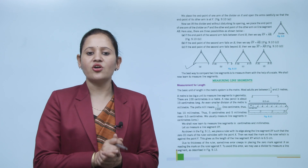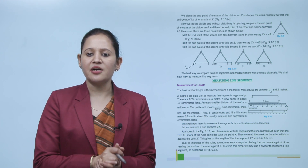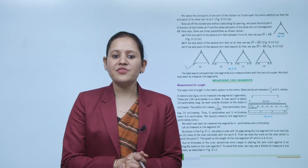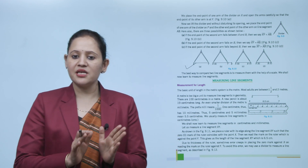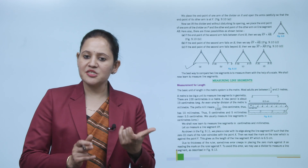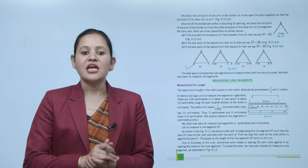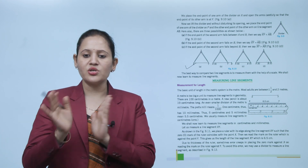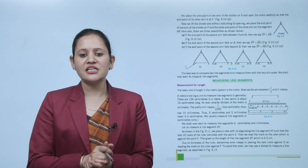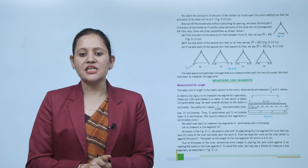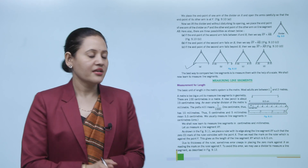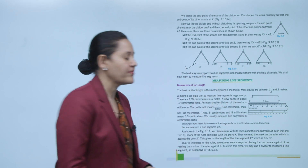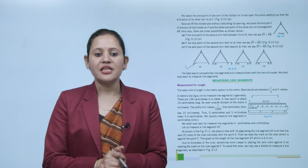We lift the divider and, without disturbing the opening, place the endpoint of one arm on A. There are three possibilities: if the endpoint of the second arm falls between A and B, then XY < AB; if it falls on B, then XY = AB; if it falls beyond B, then XY > AB. This is the best way to compare line segments.